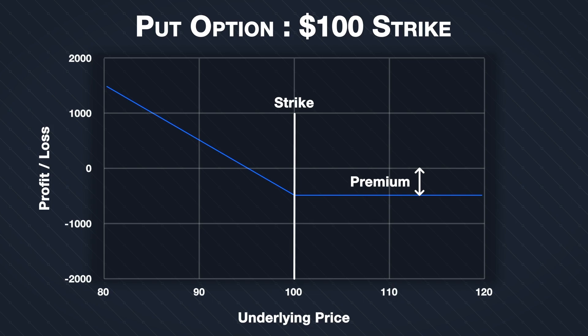The main reason is the fixed risk feature of being long a put option. It can also require less capital than shorting the asset, depending on margin requirements. Put options can also be a useful way to hedge downside risk while maintaining a long position in the underlying asset.